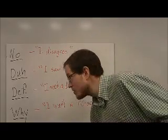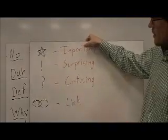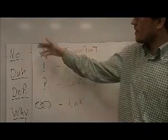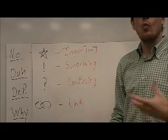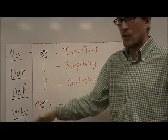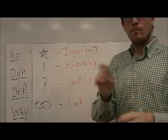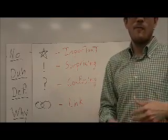So these four words and symbols, the star, the exclamation mark, the question mark, and the link, and then these four short word symbols, no, duh, def, and why, are basically your main tool kit when you're marking up a text for review.